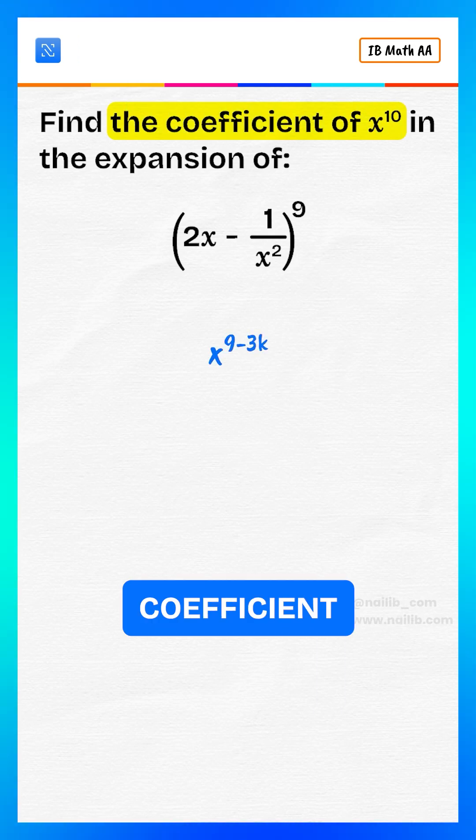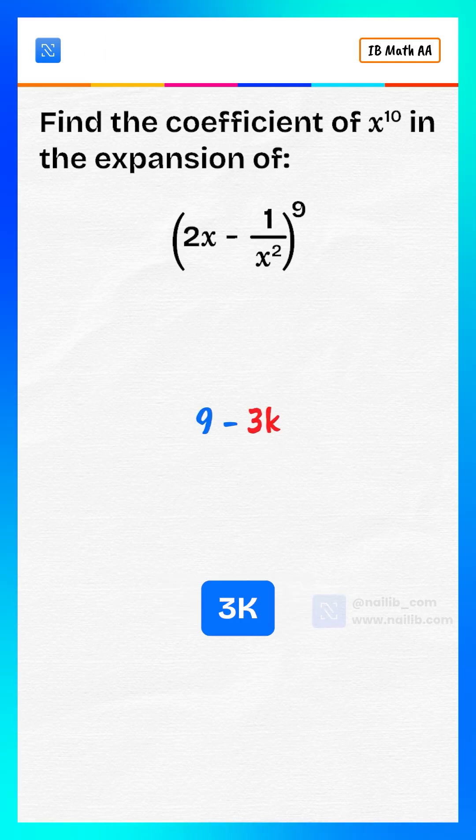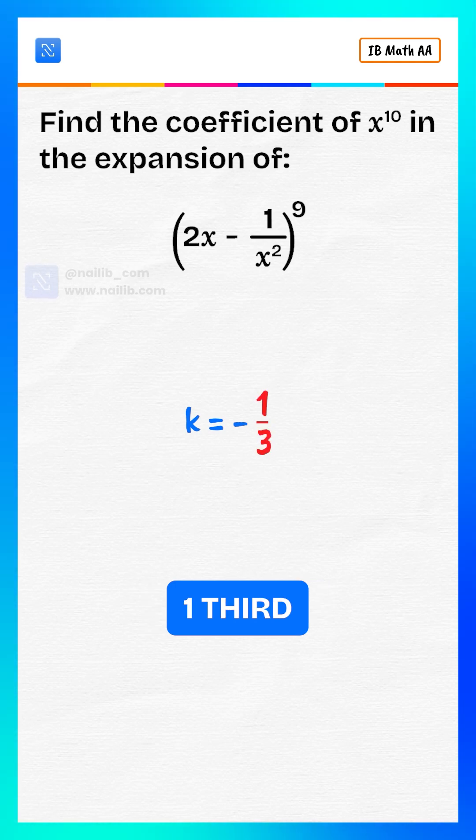To get the coefficient of x to the power of 10, solve 9 minus 3k equals 10. That gives k equals minus 1 third.